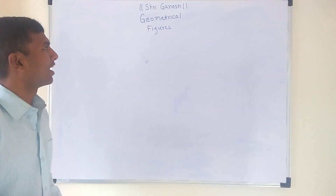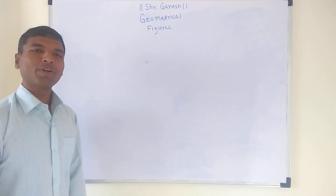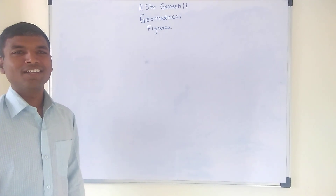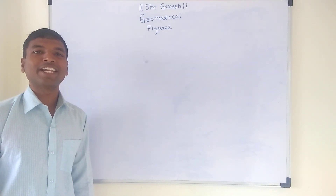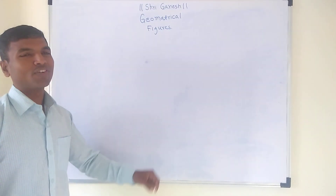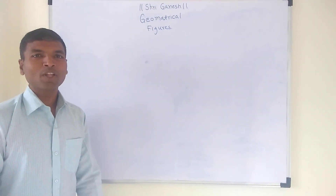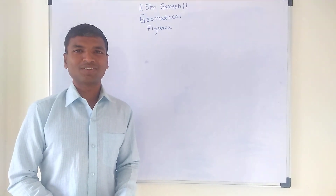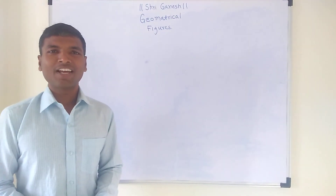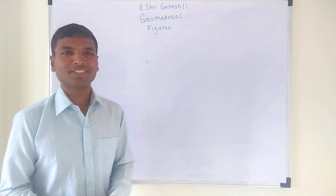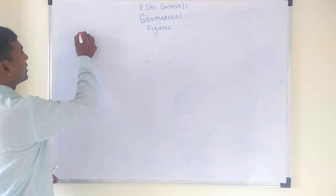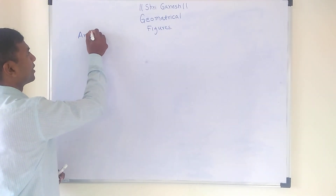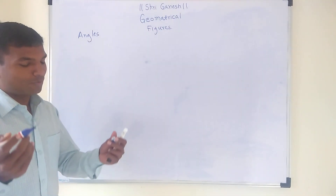Hello, welcome to the class. Today we are going to learn about geometrical figures. This class is specially recorded for my nephews who are in 4th standard. This chapter belongs to the 4th standard Maharashtra State Board syllabus — first chapter, Maths: Geometrical Figures. Now we'll learn about angles. There are different types of angles and we are going to learn the first three major types.